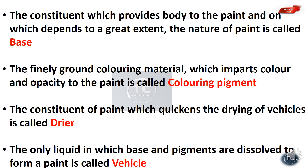The constant which provides body to the paint, and on which depends to a great extent the nature of paint, is called the base. The base is the body of the paint. We use the base in the paint.